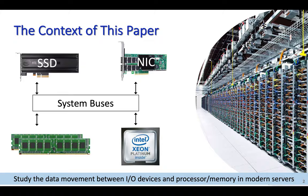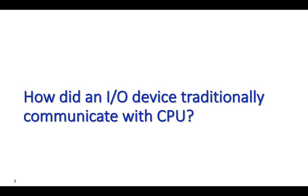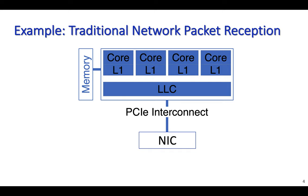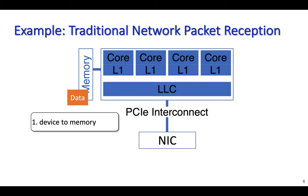The first question we are going to address is how traditional I/O devices communicate with CPU and memory. Let's discuss an example: network packet reception from a network interface card, or NIC, in a traditional server. The NIC is connected over a PCI Express interconnect to the CPU chip and memory. We only show the data movement in the system and remove the detailed interactions between hardware and software components. Assume that a packet is received at the NIC — in the first step, the data is DMA'd to the network buffers inside the main memory over the PCI Express interconnect and memory channels.